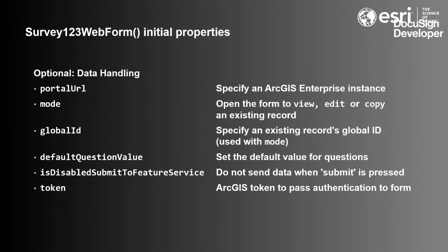We have the ability to override default question values. We can also initialize a form to not submit data to a feature service — we've seen instances where an author wants to put a form into an application more like a scratch pad or in-app calculator. By setting 'is disabled submits to feature service', the user can interact with the form normally but when they press submit, the data doesn't get stored in ArcGIS Online. Finally, you can pass a token from your application to a web form — tokens are required when your form is not shared publicly. We'll talk about the security aspect at the end regarding how to pass a token if your server is not going to be publicly enabled.